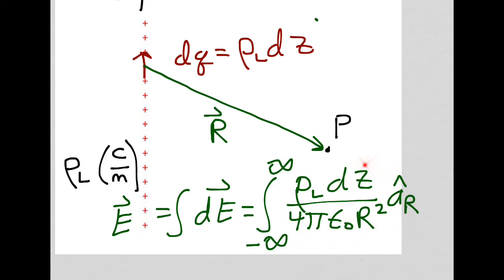We could use this technique to find the electric field intensity for any charge distribution. We might not be able to get a nice closed-form solution, but we could always go to a digital computer to find the electric field intensity at any point. But when we have a nice symmetric charge distribution like this one, we can use Gauss's law to very quickly obtain the electric field intensity, and it also gives us a better mental model and physical feel for the relationship between charges and the electric field intensity.